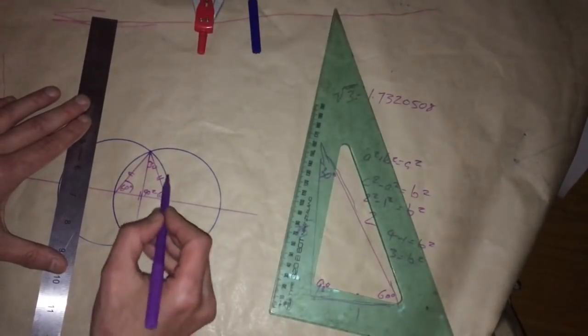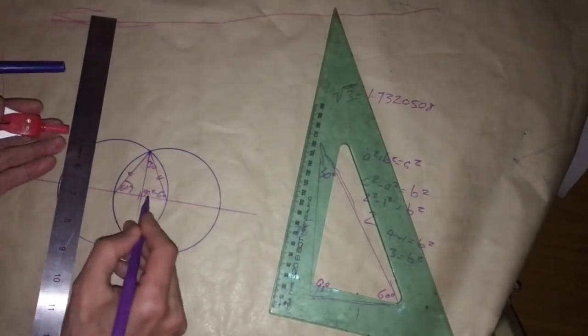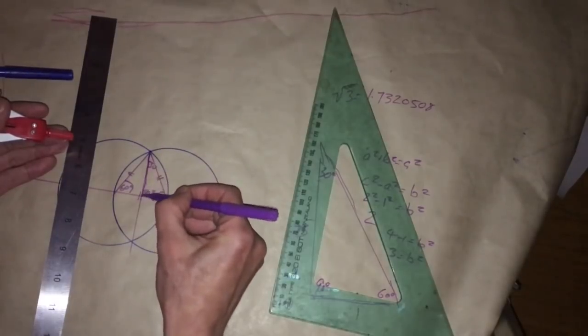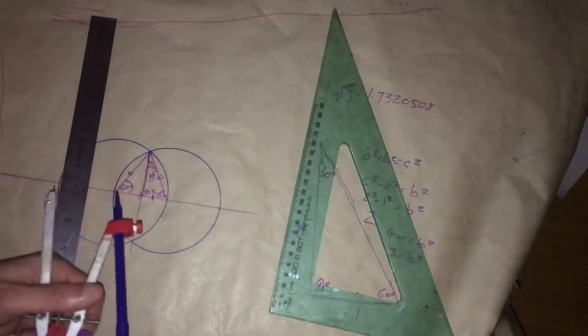And we've already shown, so if this unit, the compass setting is at 2, therefore because we've cut it in half that has to be 1. Therefore this line has to be the square root of 3.